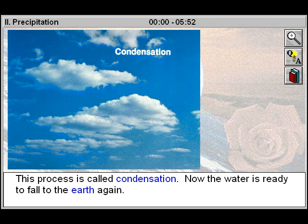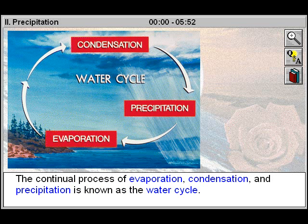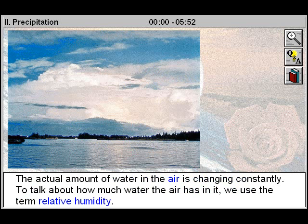Now, the water is ready to fall to the Earth again. The continual process of evaporation, condensation, and precipitation is known as the water cycle.